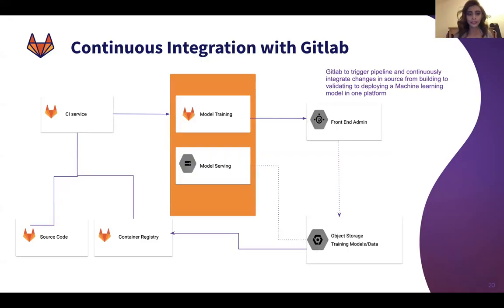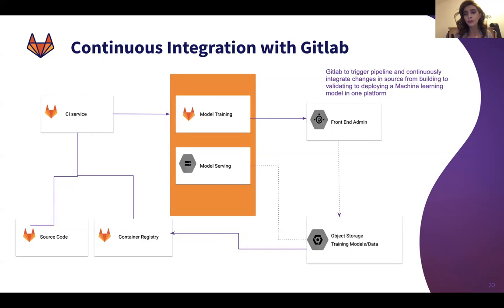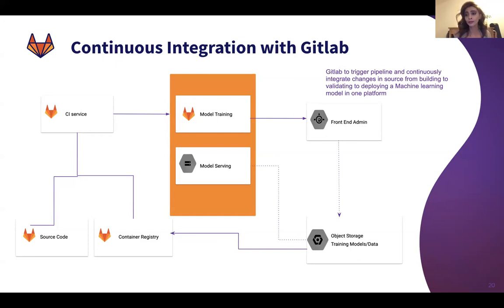Where GitLab plays a role is specifically in the CI service part, the source code part, the container registry, as well as training the model in the GitLab runner. GitLab triggers the pipeline, continuously integrates the changes in the source — from building to validating and deploying a machine learning model into one platform, as well as training.